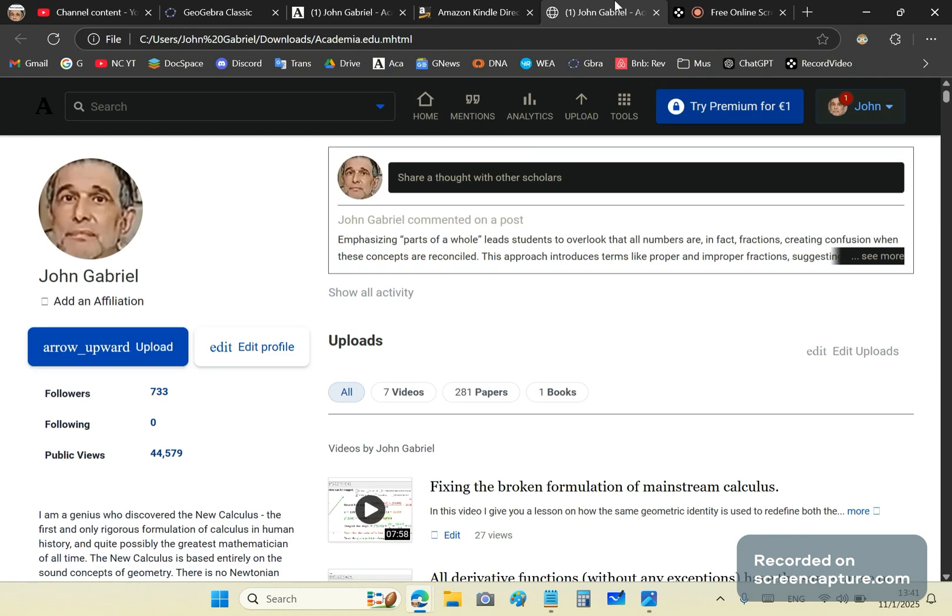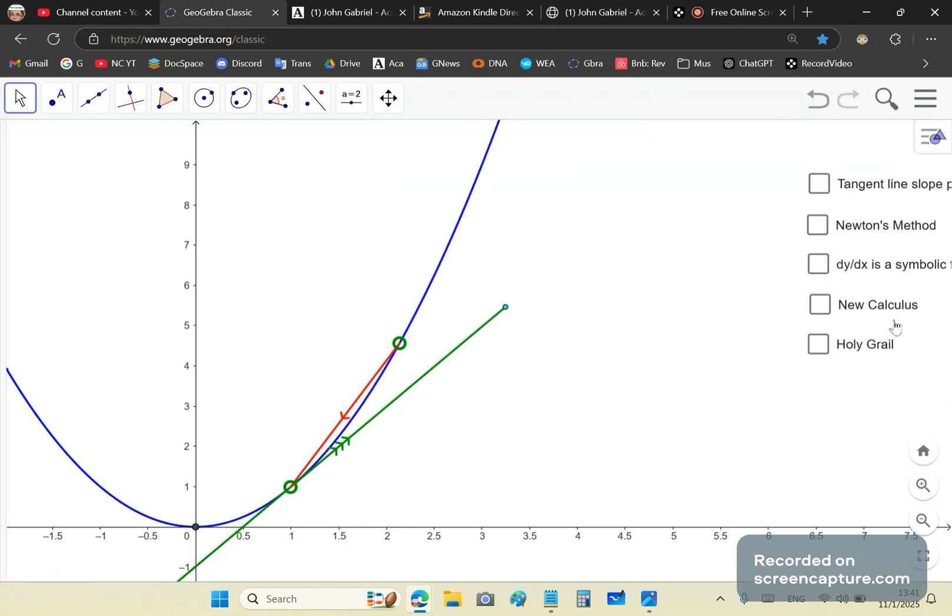Now, in a very old applet, I showed you that the tangent line slope differs from the secant line slope. This is a secant line slope and a tangent line slope. And it's basically just a small difference.